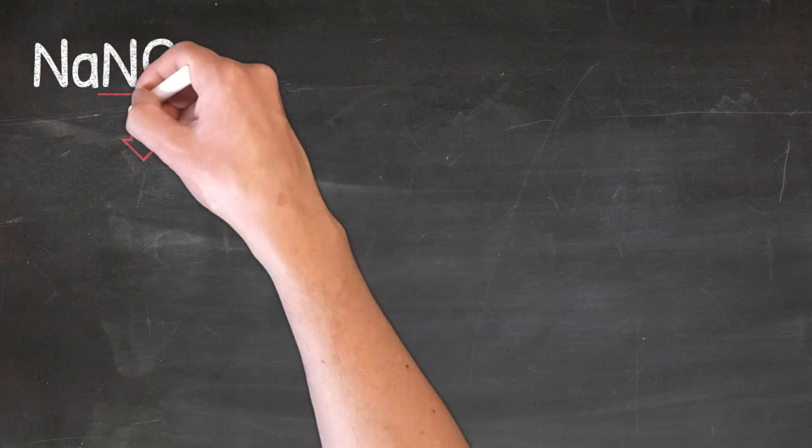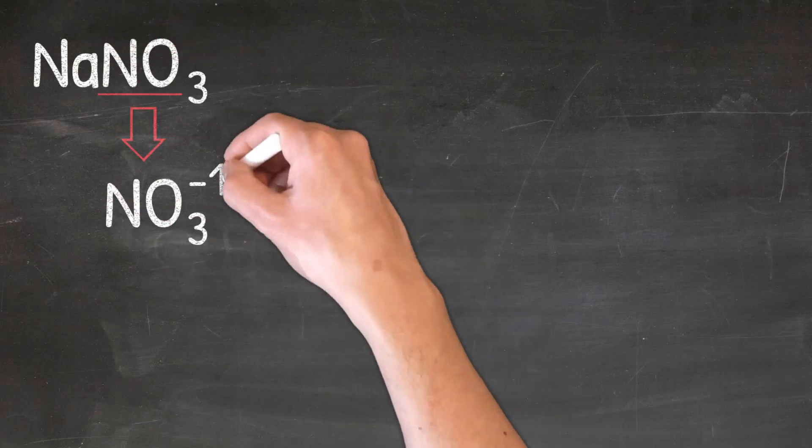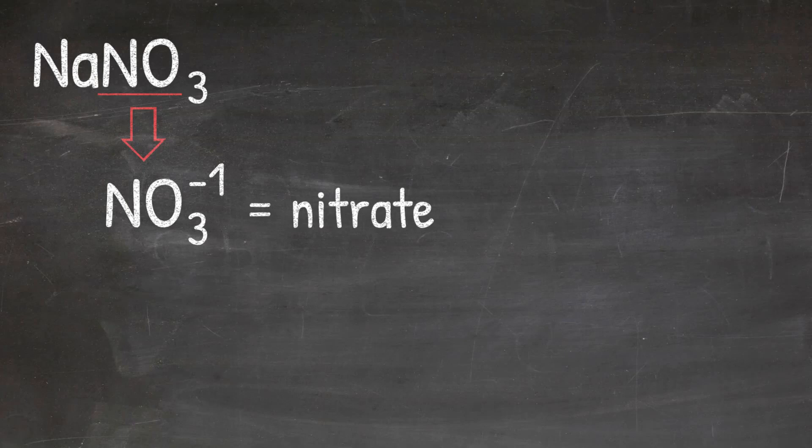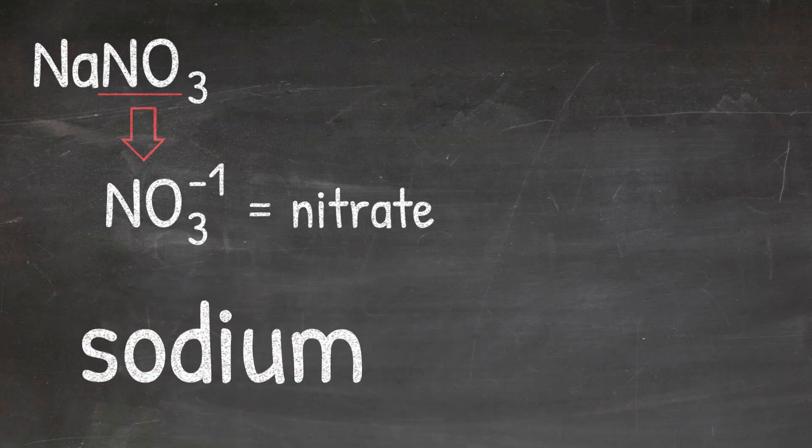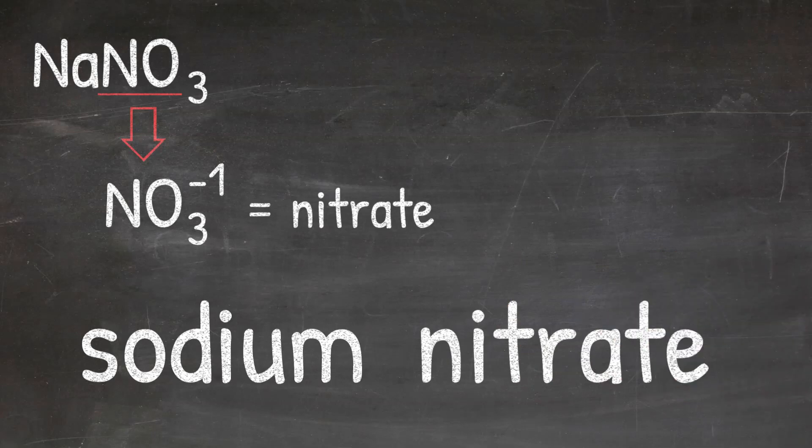In this case, the polyatomic ion present is NO3 minus, which is nitrate. So when I name NaNO3, the first element, sodium, will keep its name. And the second element is not actually an element, but a polyatomic ion. And the polyatomic ion will keep its name. And since the polyatomic ion is NO3 minus one, which is nitrate, I'll just write nitrate. So the name of NaNO3 would be sodium nitrate.